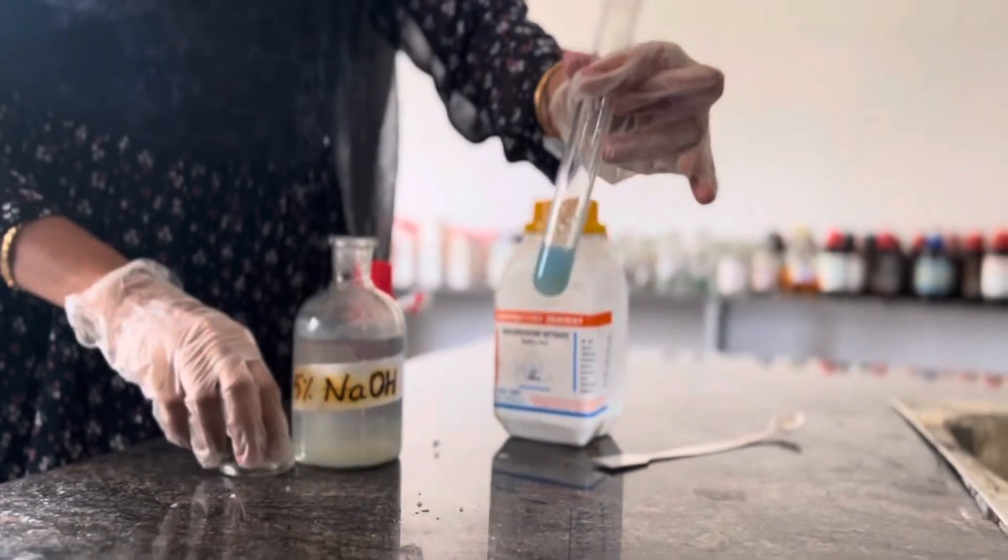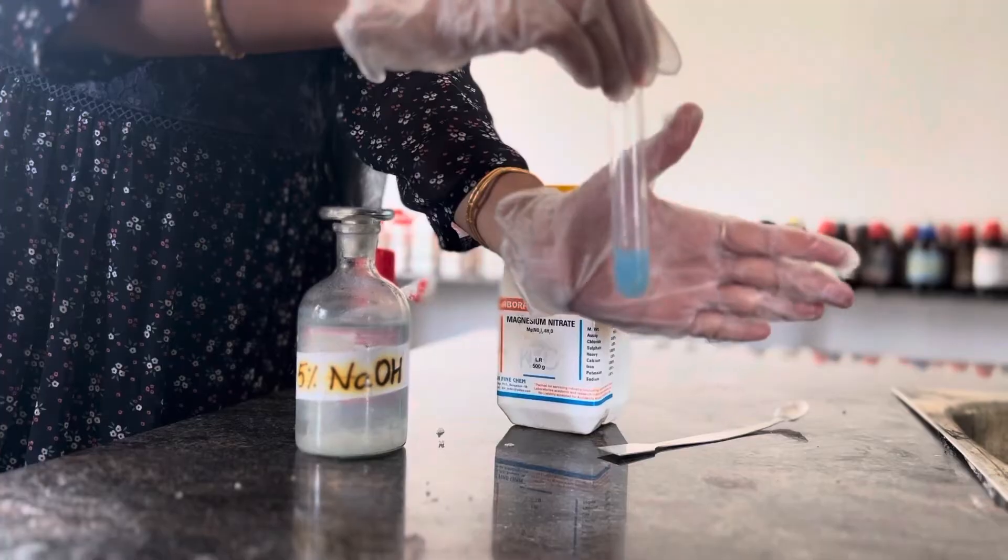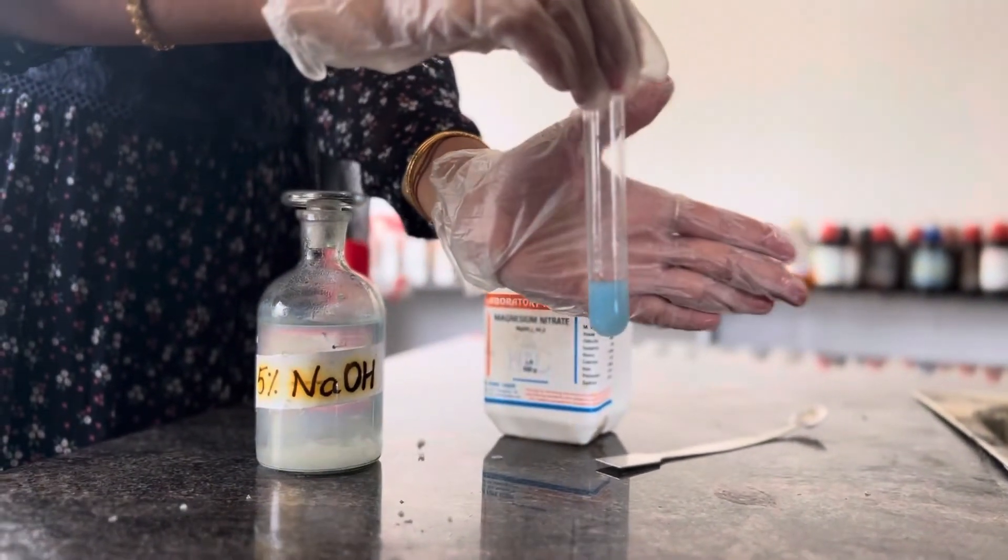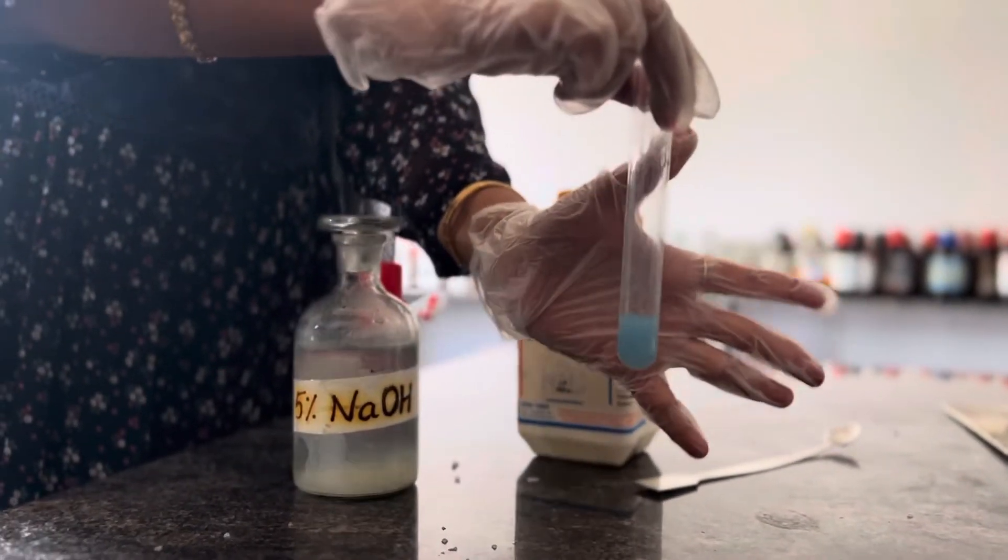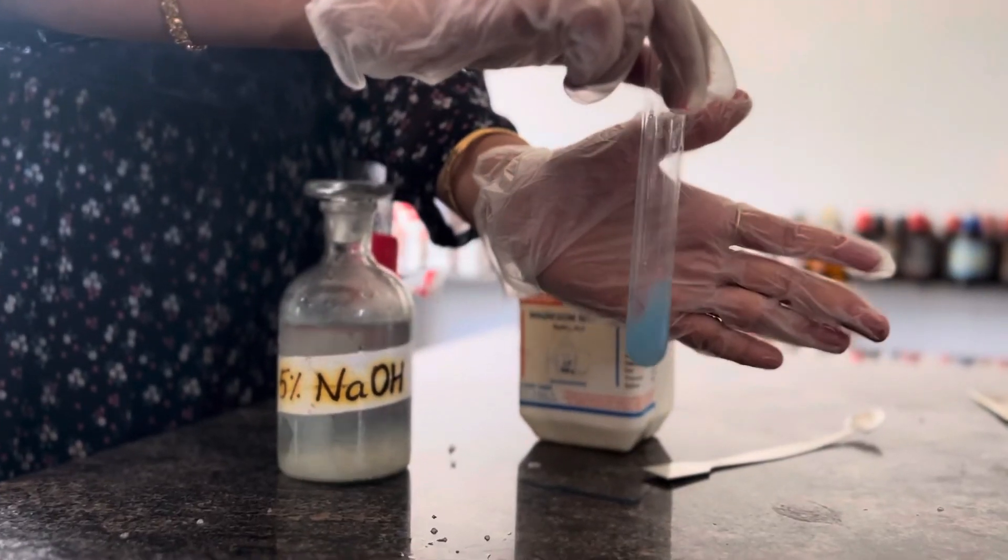When we add the sodium hydroxide, if you get a blue precipitate, then the presence of magnesium is confirmed and this is because of the formation of the complex. Here you can see the formation of a blue colored precipitate, right? This means the magnesium is confirmed.